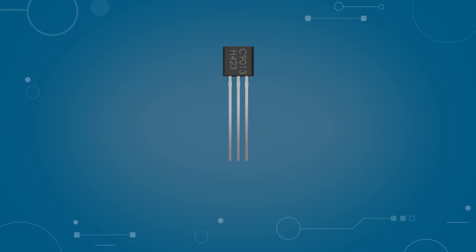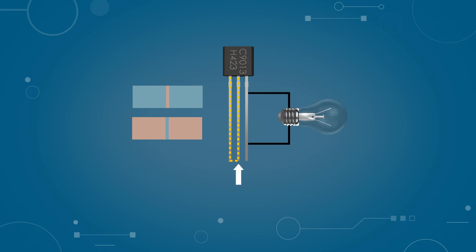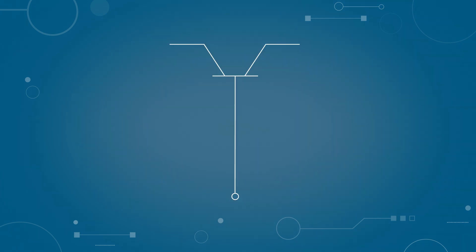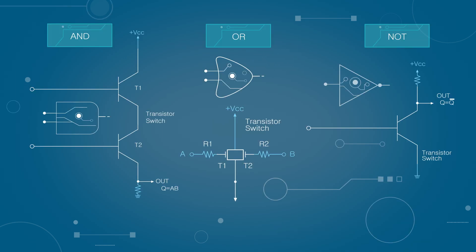A transistor contains semiconductors in either a PNP or NPN configuration. When a specific voltage is applied to the central conductor, current flows. A transistor is represented by a diagram which abstractly shows that applying voltage to the middle enables current to flow. Using such transistors, you can build logic circuits known as logic gates.